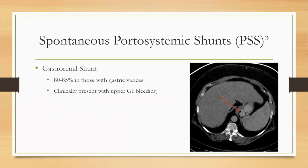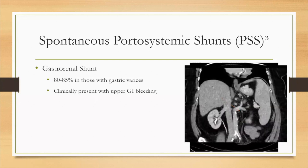A gastrorenal shunt is also commonly encountered on CT imaging. It arises in a vast majority of those with gastric varices, and these patients can present with upper GI bleeding. Here you can see large serpiginous vessels at the gastroesophageal junction — a nice example of gastric varices leading into a gastrorenal shunt, where the shunt goes from the varices into the left renal vein.